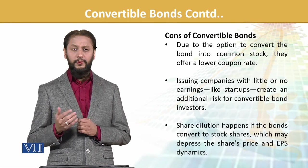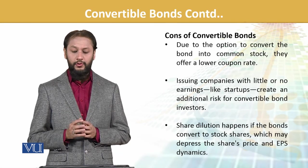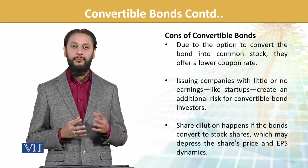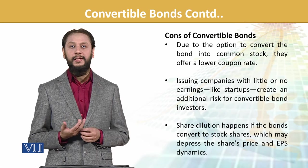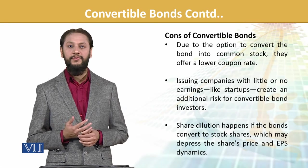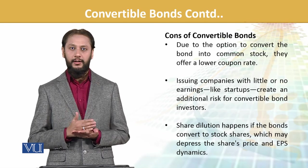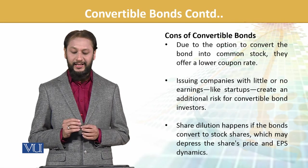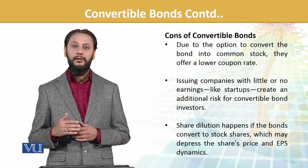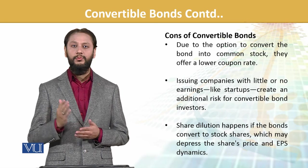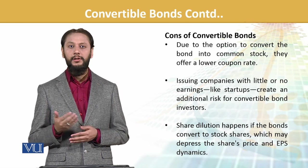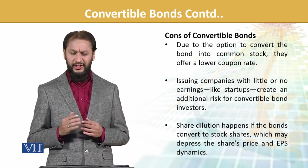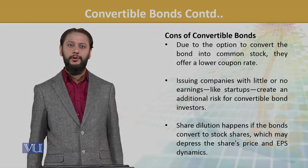Cons of convertible bonds: due to the option to convert into stock, they offer a lower coupon rate — from the investor's point of view, they get a lower coupon rate because the conversion factor creates a slight dent in current cash flows. Issuing companies with little or no earnings create additional risk, as they add on the extra burden of the conversion option. And lastly, share dilution occurs — that is one impact to consider.